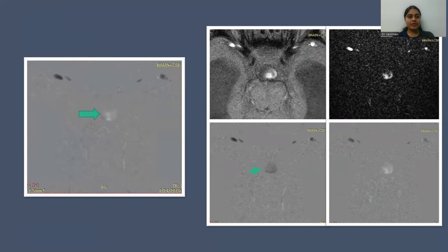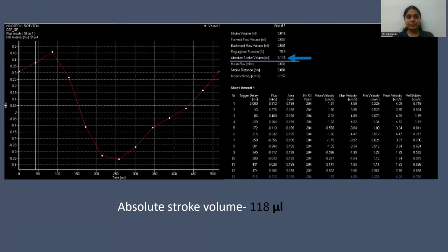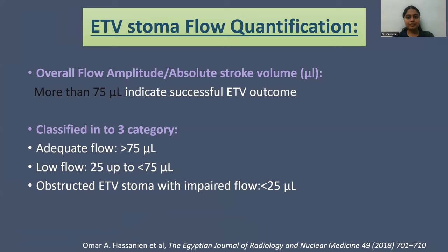Here we can see the axial phase contrast imaging which shows the to-and-fro flow motion. The absolute stroke volume on Q-flow imaging came out to be 118 microliters. ETV stoma flow quantification: overall flow amplitude, also known as the absolute stroke volume in microliters — if it is more than 75 microliters, it indicates successful ETV outcome. Thus, our patient showed good ETV outcome.